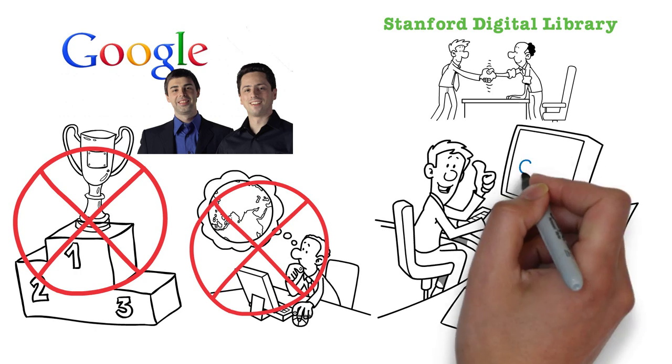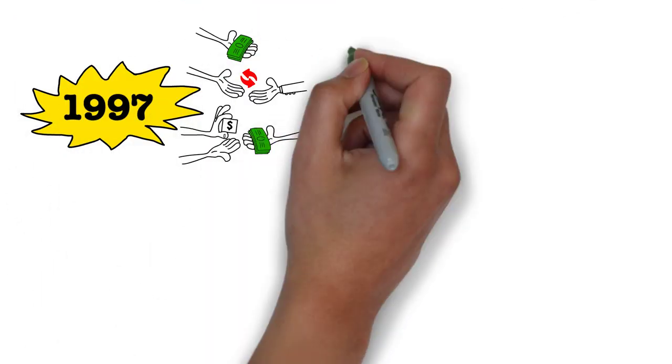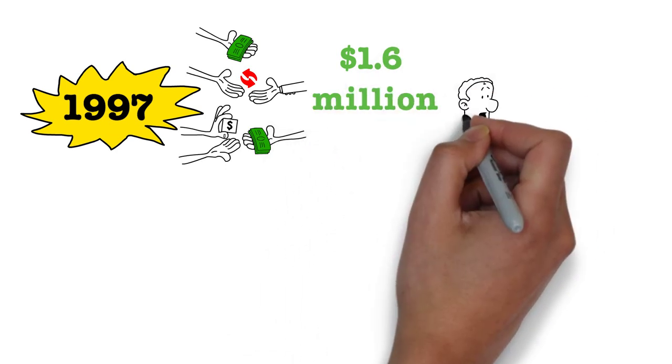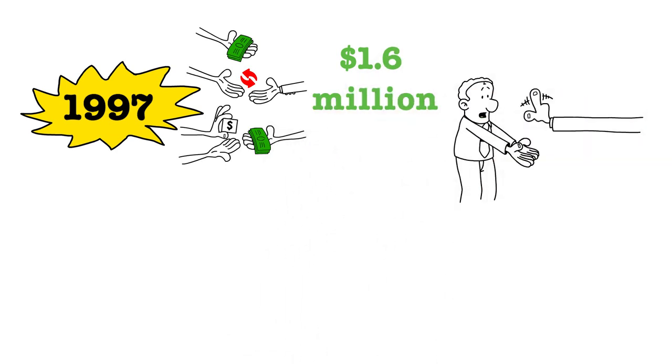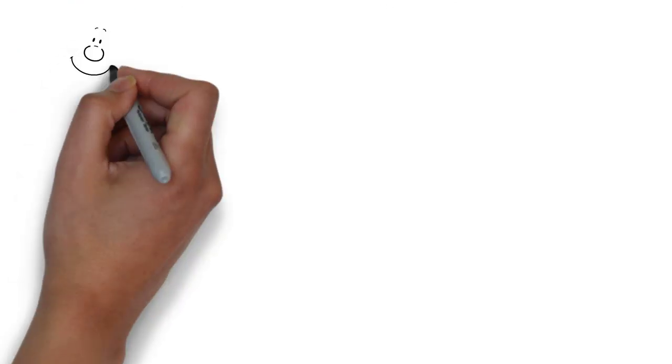This, of course, became the backbone of Google as you know it today. But back in 1997, Page wanted to sell this technology to Excite for $1.6 million. But the CEO of Excite turned them down. When they could not sell this technology at all, in 1997, they decided to launch their own company, Google.